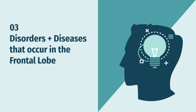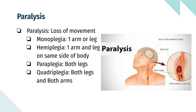Last but not least, the different disorders or diseases that occur in the frontal lobe. The first on our list is paralysis, which is the complete loss of movement. Monoplegia is the loss of movement in one arm or leg. Hemiplegia is the loss of movement in one arm and one leg on the same side of the body. Paraplegia is the loss of movement in both legs, and quadriplegia is the loss of movement in both arms and legs.